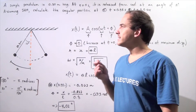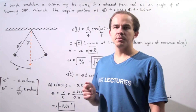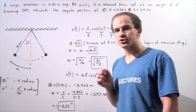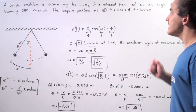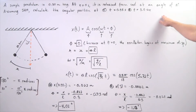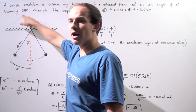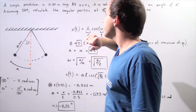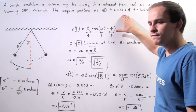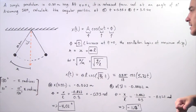Let's look at the following example dealing with simple harmonic motion of a simple pendulum. We have a simple pendulum that is 0.3 meters long. At time equals zero seconds, the pendulum is released from rest at an angle of 10 degrees. Assuming simple harmonic motion, we'd like to calculate the angular position at time equals 0.35 seconds and at time equals 3 seconds.